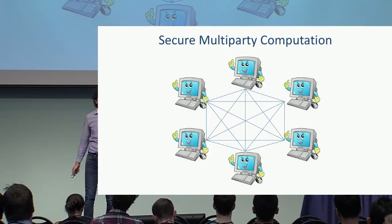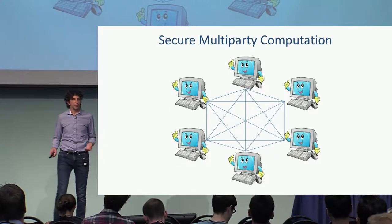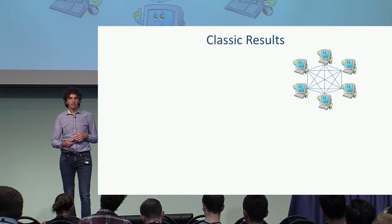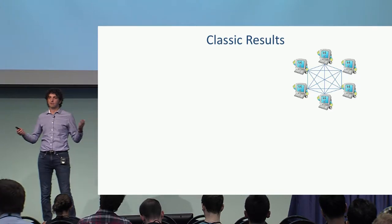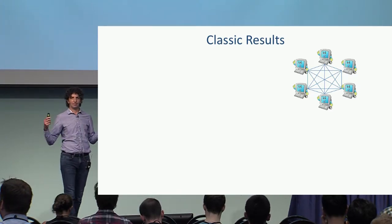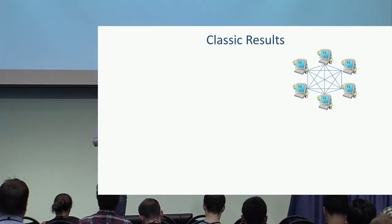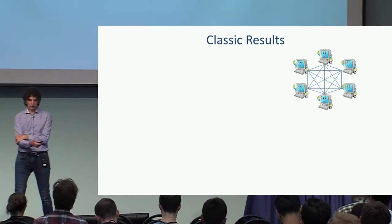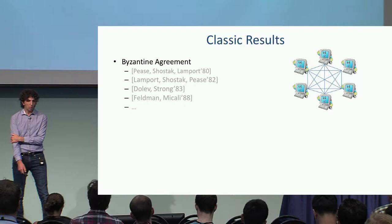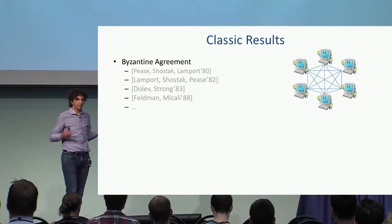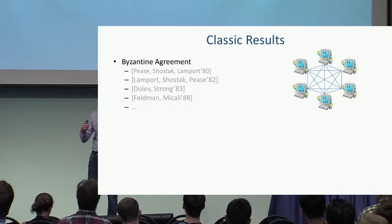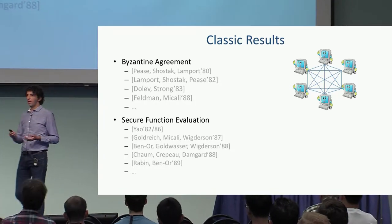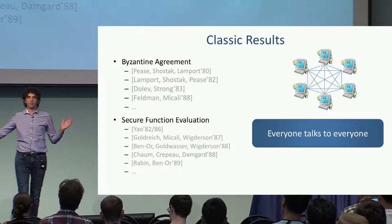In this work, we talk about secure multiparty computation. We have a set of parties that want to compute some tasks together in a secure manner. We have many classic good protocols that can achieve very impressive goals. Mostly the classic protocols dealt with Byzantine agreement or secure function evaluation, and in those protocols, every party talks to every other party.